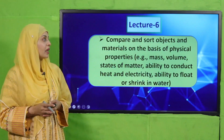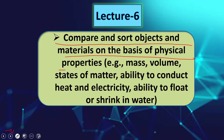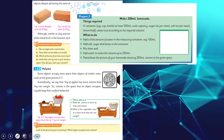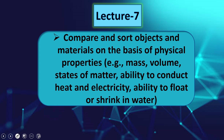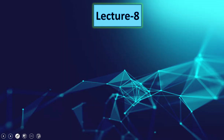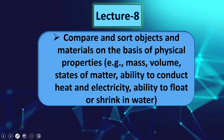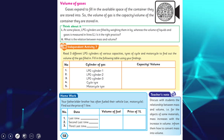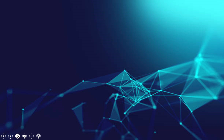In lecture number six, students will again compare and sort objects and materials on the basis of physical properties. The page included is page number 56. We will also make project number two in this section. In lecture number seven, students will again compare and sort objects and materials on the basis of physical properties — the same SLO continues but the reading page will be different. In lecture number eight, students will again compare and sort objects and materials on the basis of physical properties, and in this lecture we will focus on volume. The page included is page number 58.